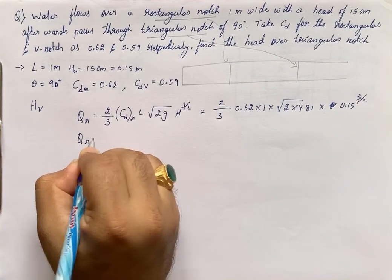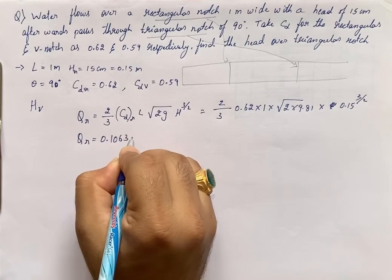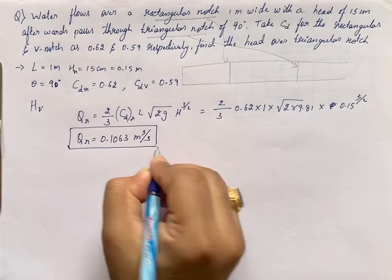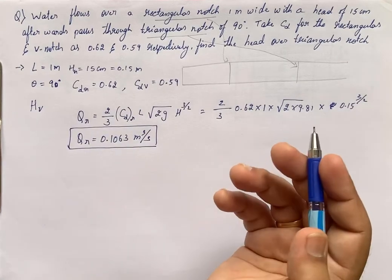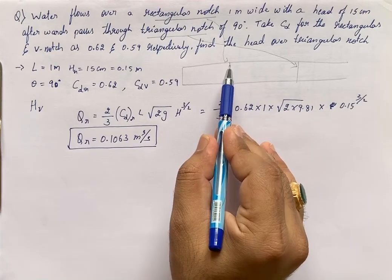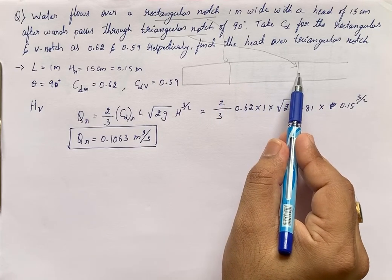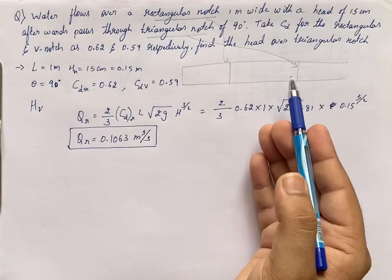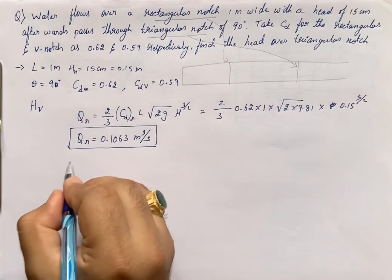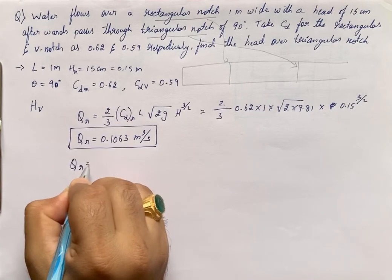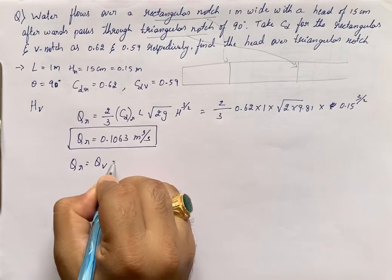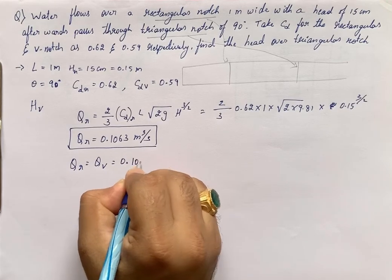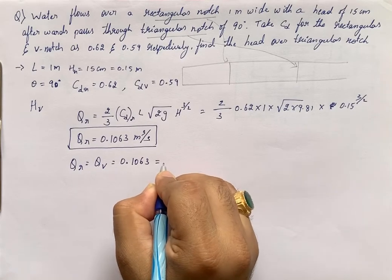So discharge Q_r = 0.1063 m³/s. This is the discharge over the rectangular notch. Since the same fluid flows over the triangular notch, Q_r equals Q_v. So I write 0.1063 equals the formula for discharge over a v-notch.